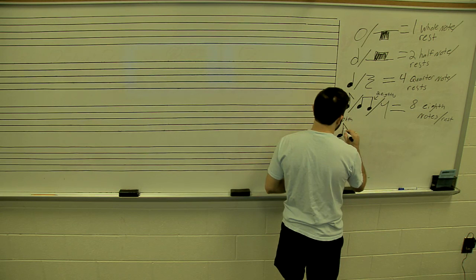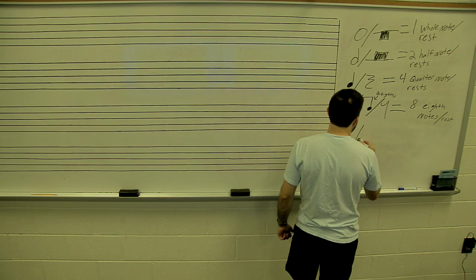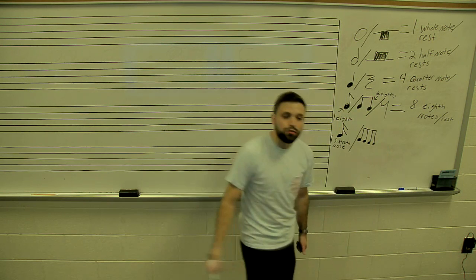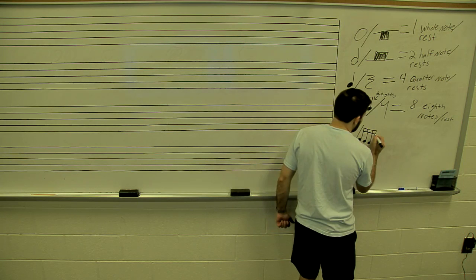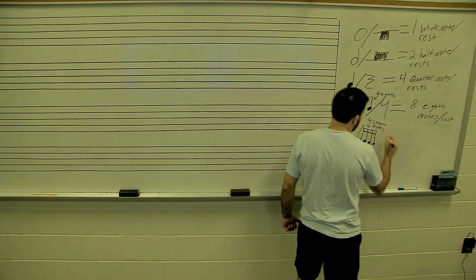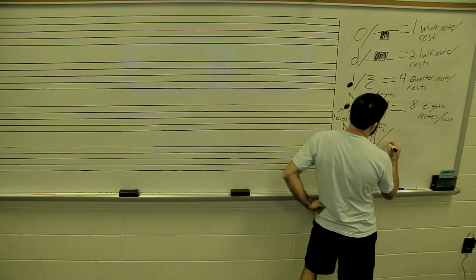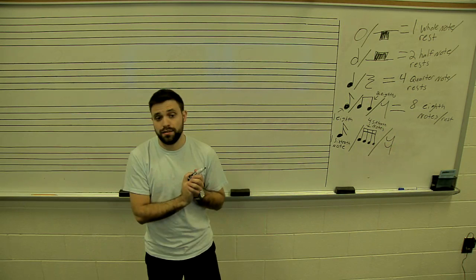And then finally you have sixteenth notes, which by themselves look like a quarter note with two flags. They're oftentimes beamed together in groups of four with two bars instead of the one bar used for eighth notes. That gives you four sixteenth notes beamed together.